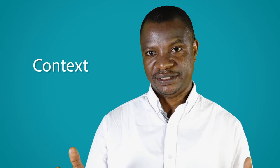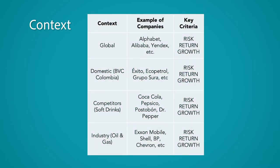The starting point is to decide the context in which we intend to compare the companies. For example, for the group context, we select a set of group of companies. For competitors' context, we select a set of close competitors. In the market context, we select companies from the target market, like the S&P 500 or BVC if we are talking about Colombia. For the industry context, we select companies from the industry. For domestic context, we can select companies from the target country, and so on. From the selected companies, which are based on intended contexts, we select a peer of companies that are identical in one or more value drivers such as risk, return, and the growth of cash flow.